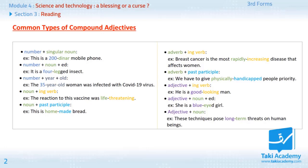As I said earlier, these words could be a noun, an adverb, a preposition or a past participle. You will see them here in the table in different colors. You may notice here number, noun, ing verb, participle, adverb, adjective, etc. In the table below, we see the different constructions of compound adjectives.